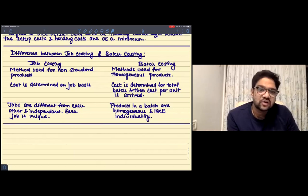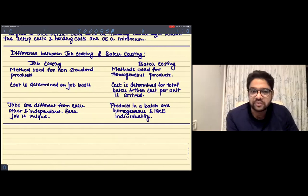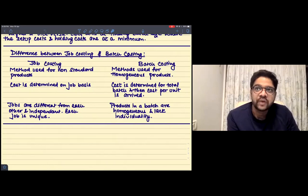Then under job costing, the cost is determined on job basis. And under the batch costing, the cost is determined for a complete batch and then cost per unit is arrived. In the job costing, the jobs are different from each other, they are independent, each job is unique.